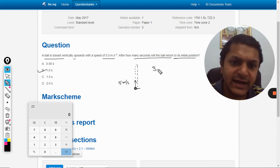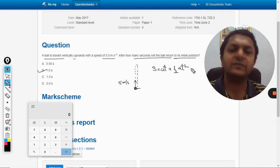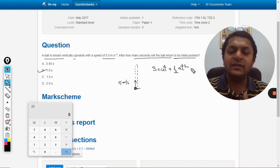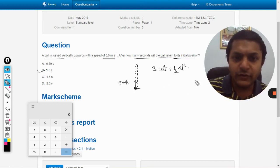Now there is this formula that s is equal to ut plus half a t squared, very famous formula in kinematics. When we apply this in motion and gravity questions, we take one direction as positive, another as negative.